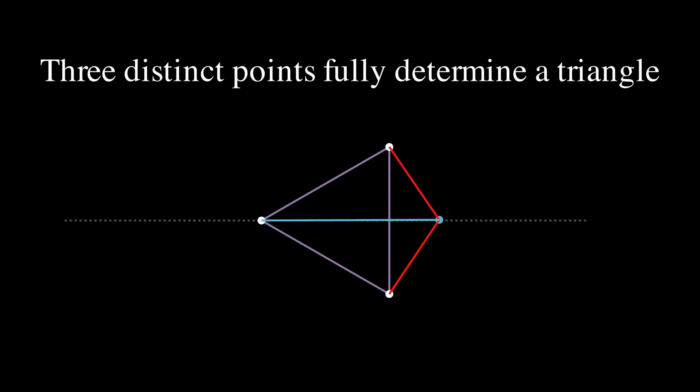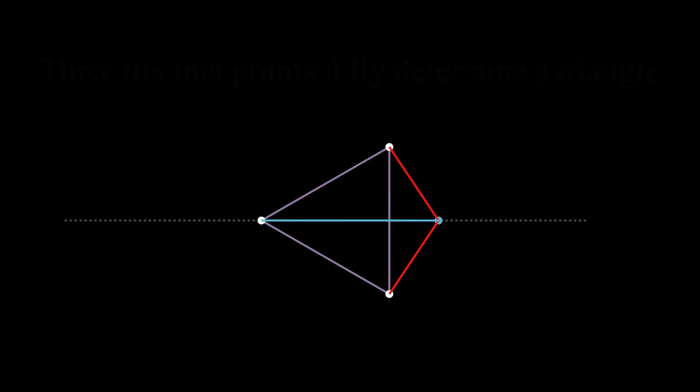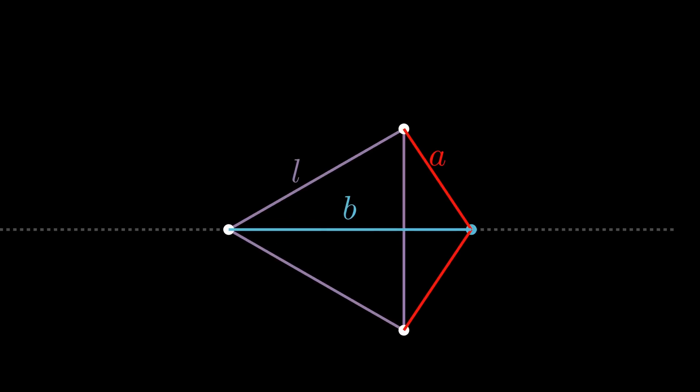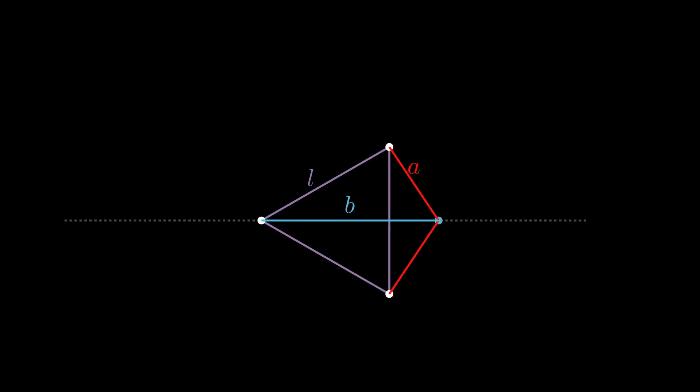Now there are three distances we need to care about. The side length of the triangle, L, the distance colored in blue, B, and the two distances which will always be the same, colored in red, A. Since we're not changing the shape of the triangle, L will remain effectively constant.